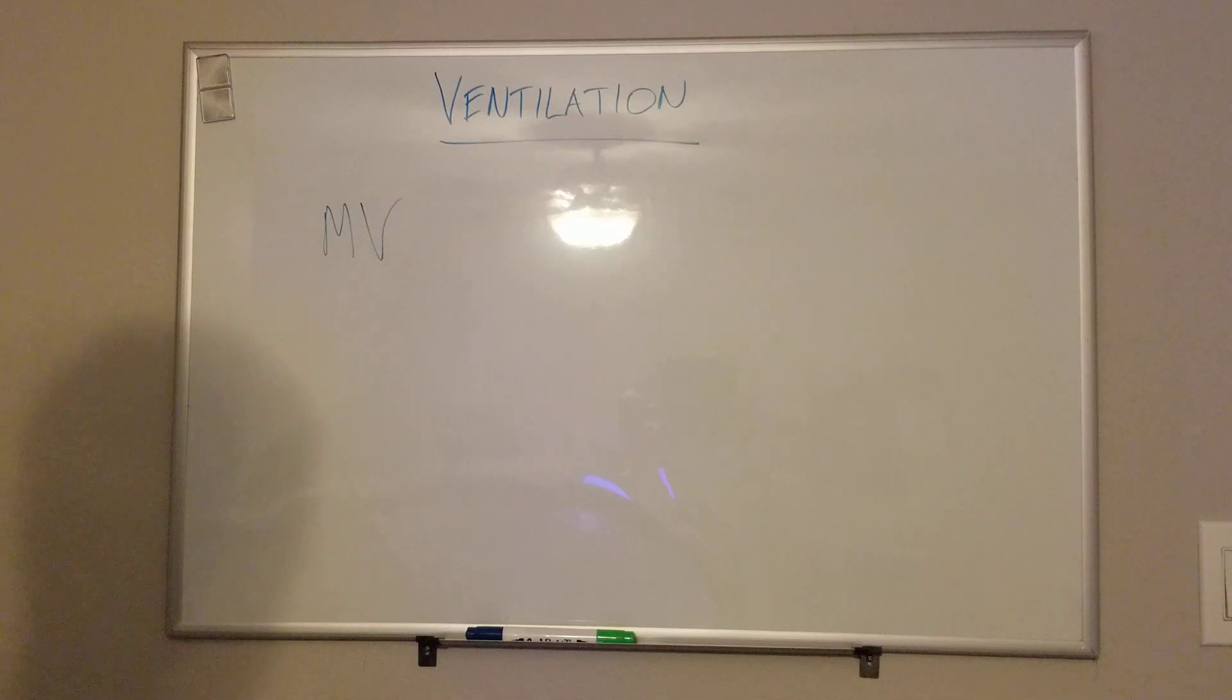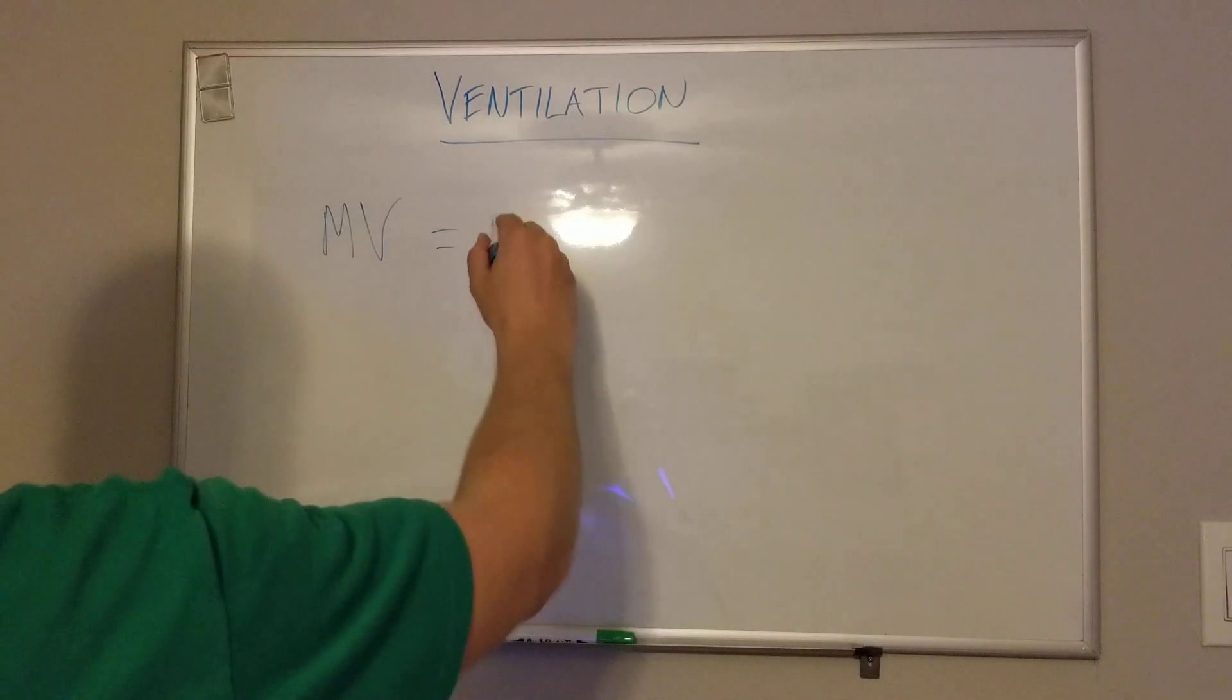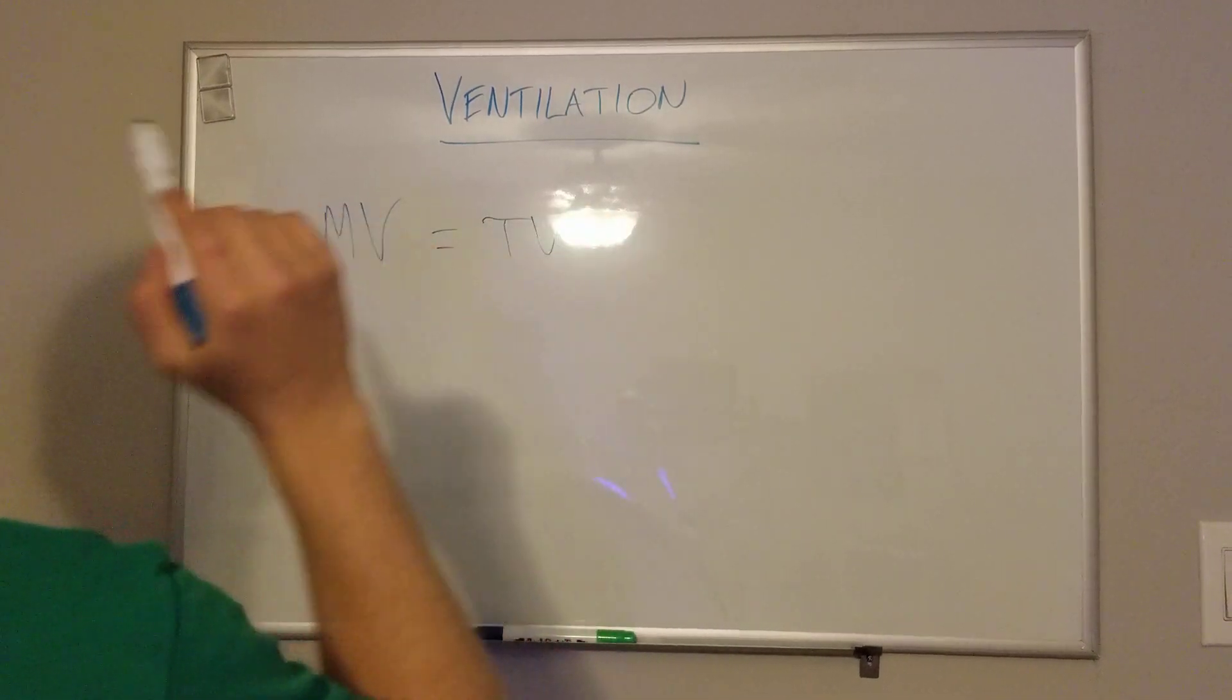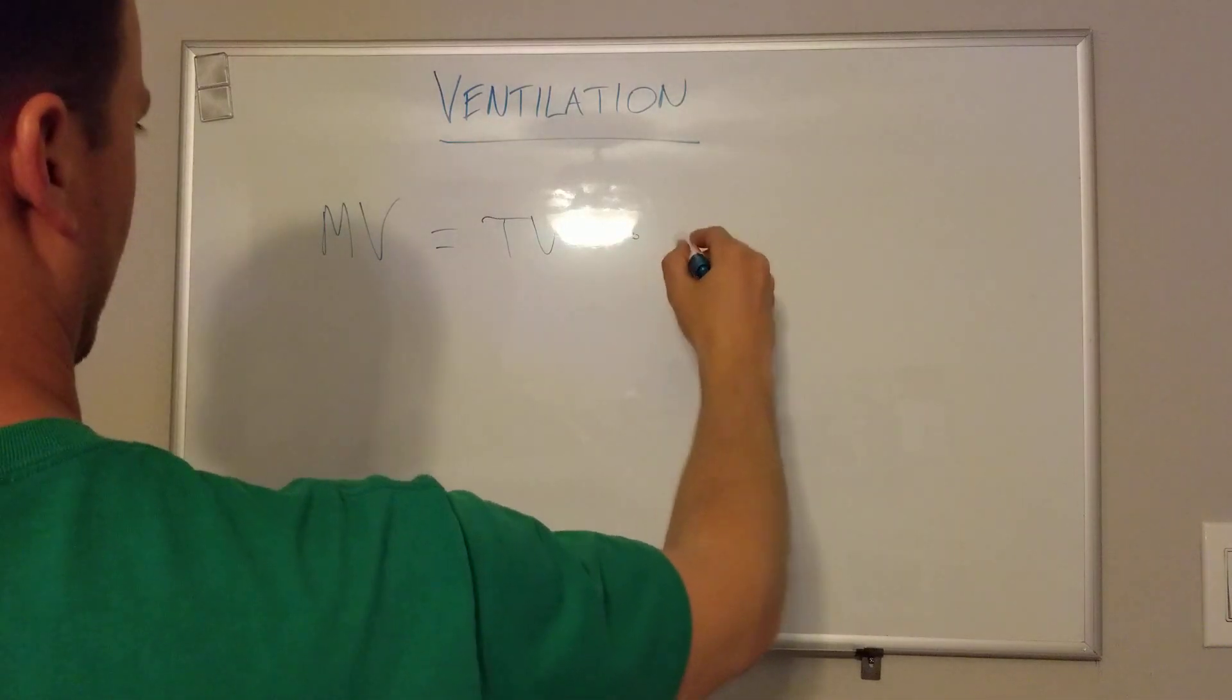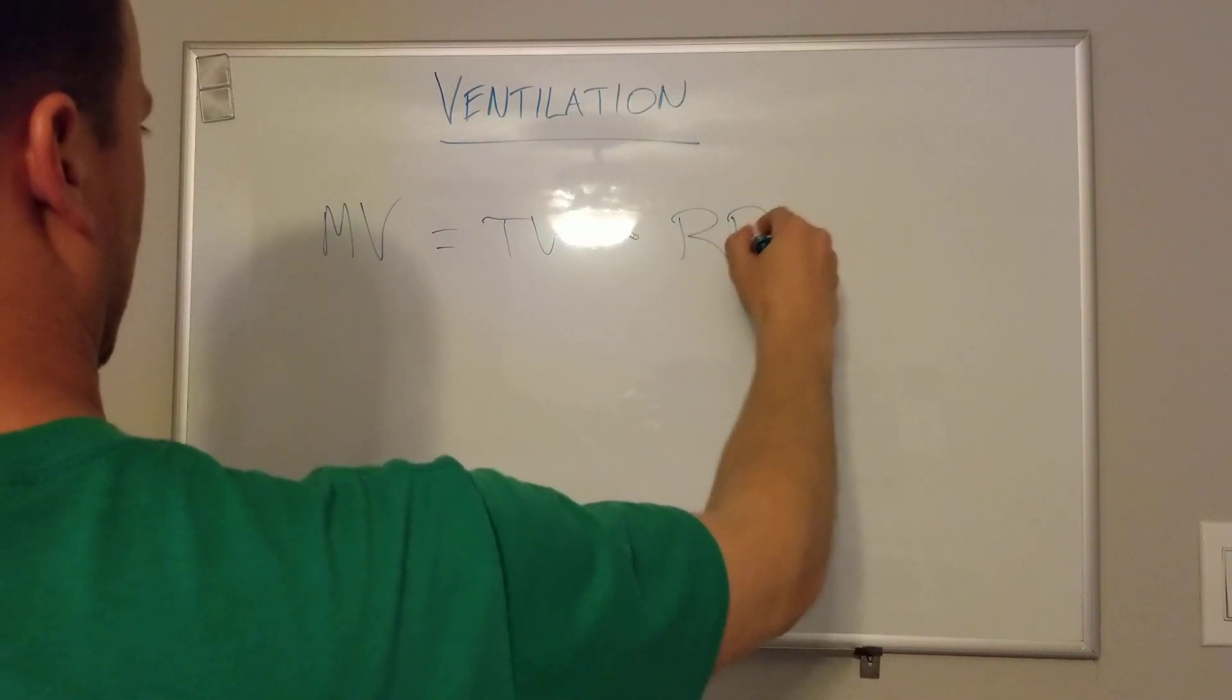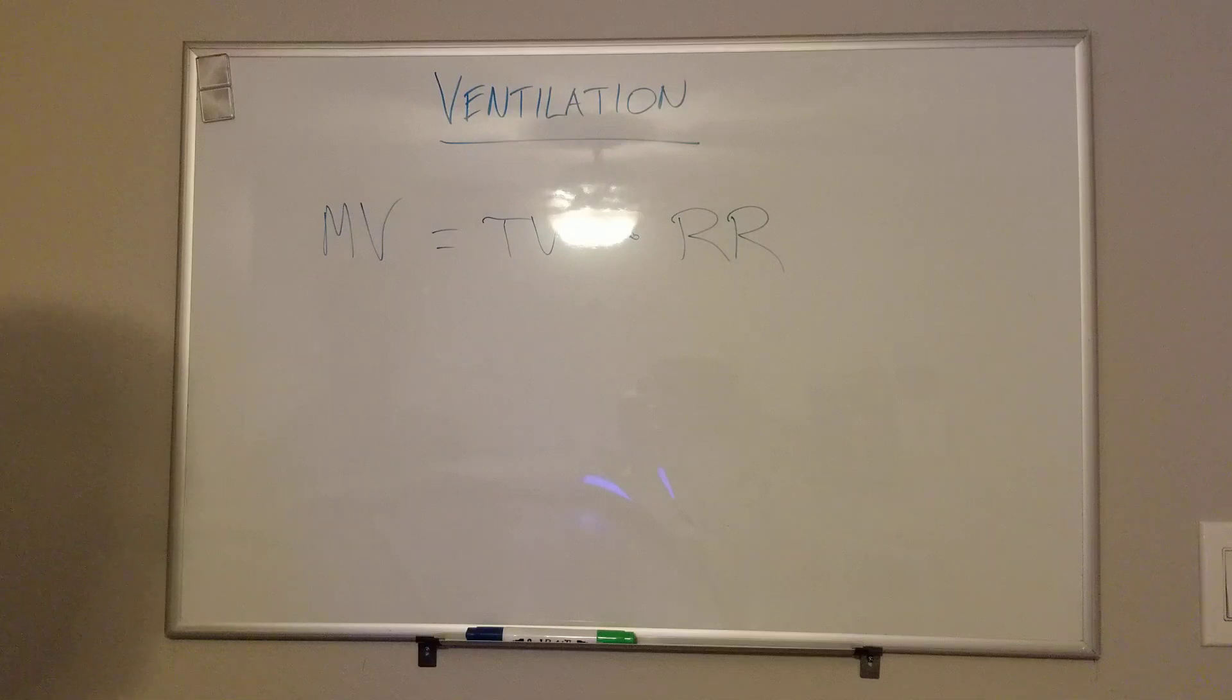Minute ventilation, in other words, is how much air are you moving per minute in terms of liters. It has two components. It equals tidal volume, which is how much air you move in and out of your body with each breath, times respiratory rate, which is just how many times a minute are you breathing.